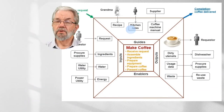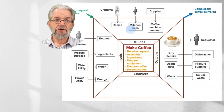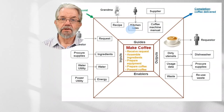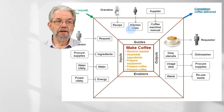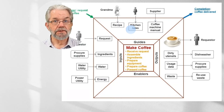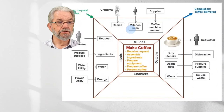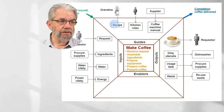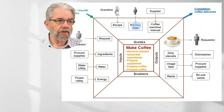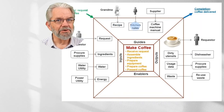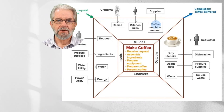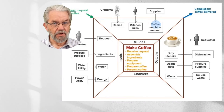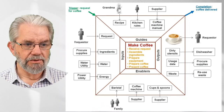Let's look at guides. Guides are always the rules, regulations, legislation, the manual that tells you how to do something — an internal manual, equipment manual, or perhaps a price list in a coffee shop. They guide the transformation of inputs into outputs and usually have some kind of text or instructional basis. Here we have the recipe — we always use grandma's recipe — a set of kitchen rules from whoever sets the rules in your kitchen, and a coffee machine manual from the supplier.